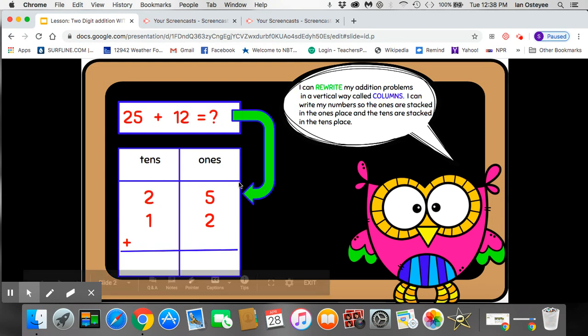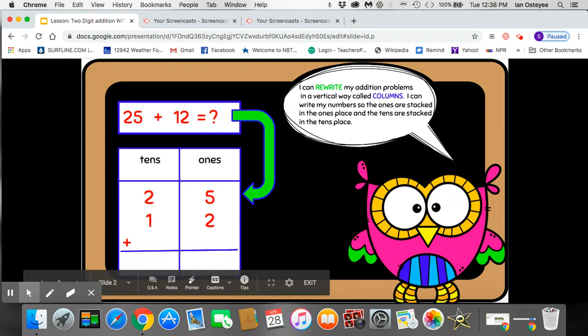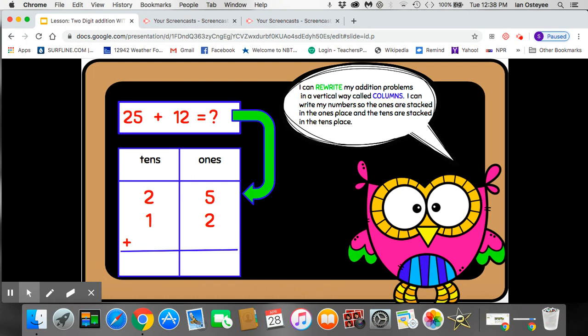So if I want to rewrite it in an up and down or vertical way to help myself add, I have to make sure that my tens go where the tens need to be in the tens part of the house and my ones go in the ones part of the house. So I have 25.